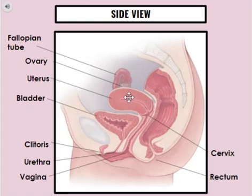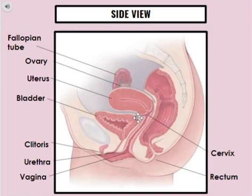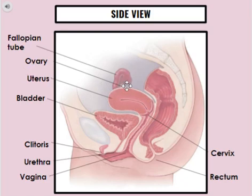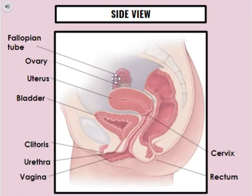We have the uterus that we talked about. There's the vagina again. We've got the cervix here at the end of the vagina, which leads into the uterus. And then we have the ovary — we only see one ovary here, but there are two, as we discussed on the last slide. And we have the fallopian tube here. We can't see the other one because this is a side view, but again, we know we have two fallopian tubes.